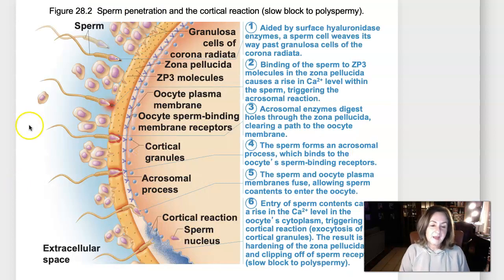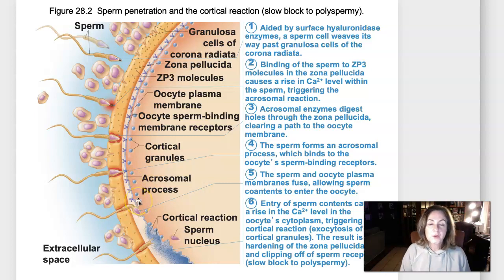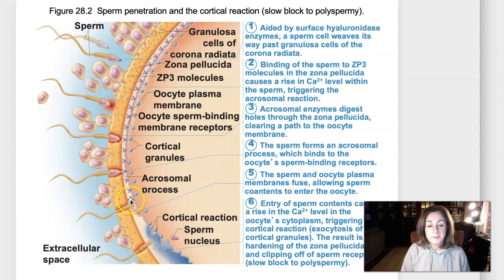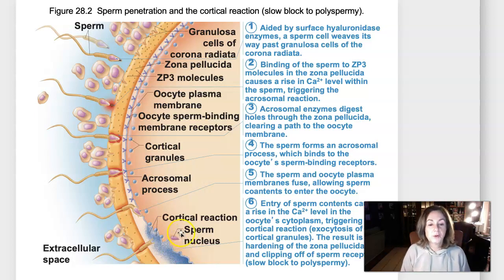For fertilization to take place, there's an actual recognition between sperm and egg where the sperm will bind to a receptor on the surface of the secondary oocyte — those Y-shaped structures on the outside of the membrane represent receptors. When that happens, the secondary oocyte will immediately bring the sperm head into the cell. That is fertilization: bringing the sperm nucleus into the secondary oocyte.